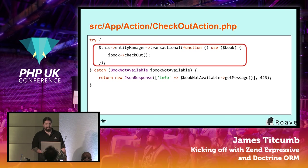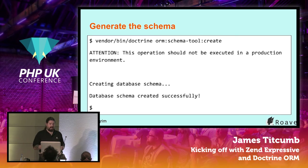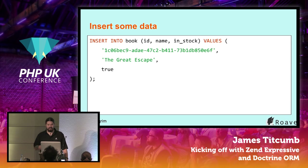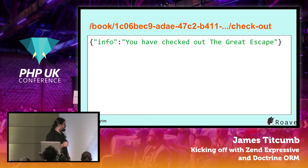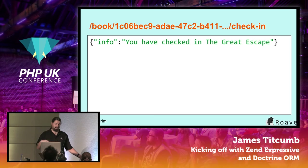The transactional call begins the transaction in the database, runs the callable you provided, then calls flush at the end. If there's any exception, it will roll back. A very practical example: if you want to create a user and take payment, and the payment fails, you might want to roll things back. We configured the CLI tool, so we can run 'orm:schema-tool:create', which examines the entities and annotations and automatically creates your database. Then insert some data, visit your URL, and you should see the JSON response for checking out a book.